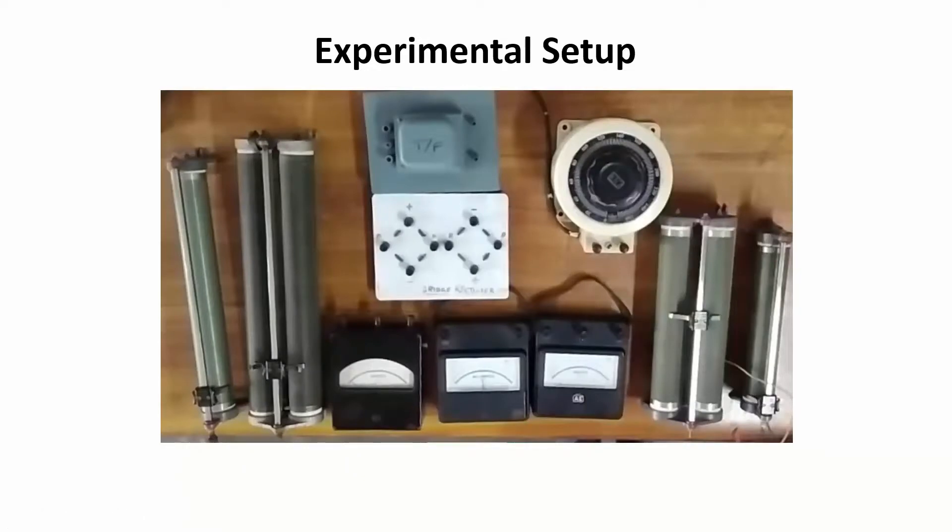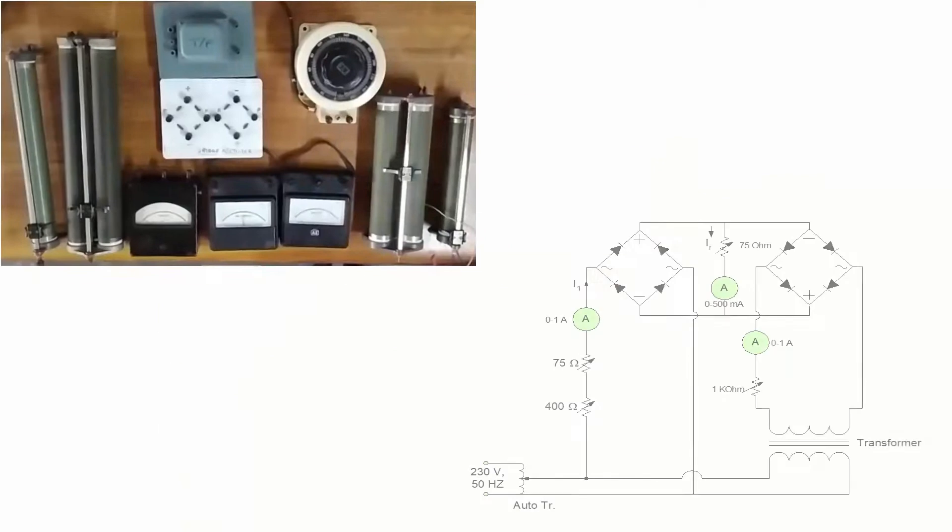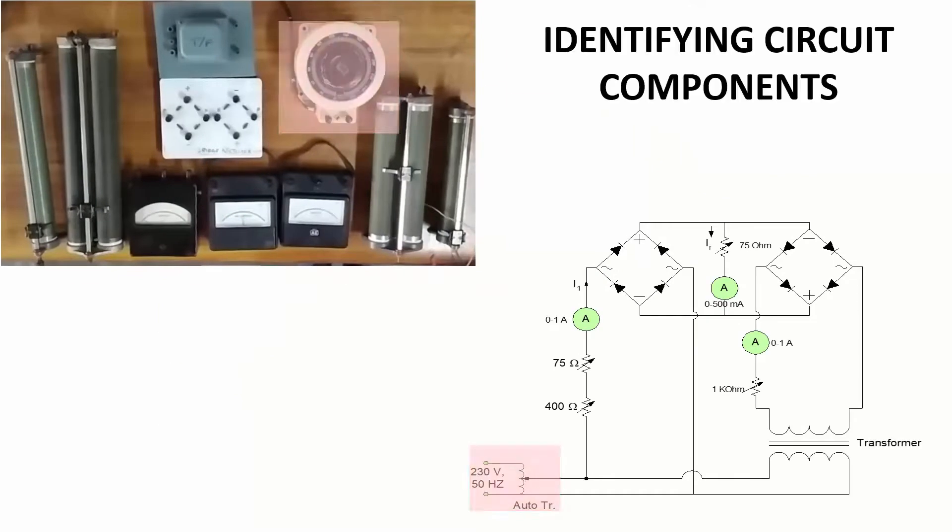Shown here is the experimental setup, the apparatus that will be employed in the experiment. Now we'll try to identify the circuit components from the circuit diagram. This is the auto transformer. This is a rheostat which can be varied to a maximum of 75 ohms. This is an ammeter having a range of 0 to 1 ampere, and the ammeter used for measuring the relay current is operating in the range of 0 to 500 milliampere.